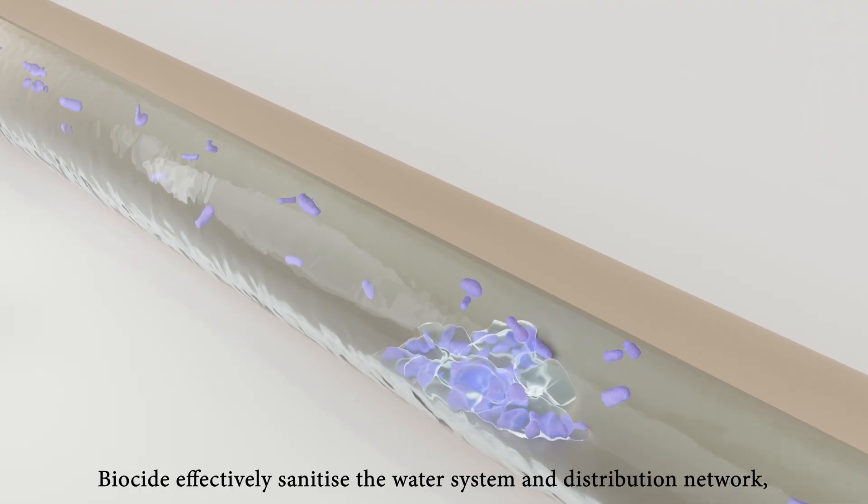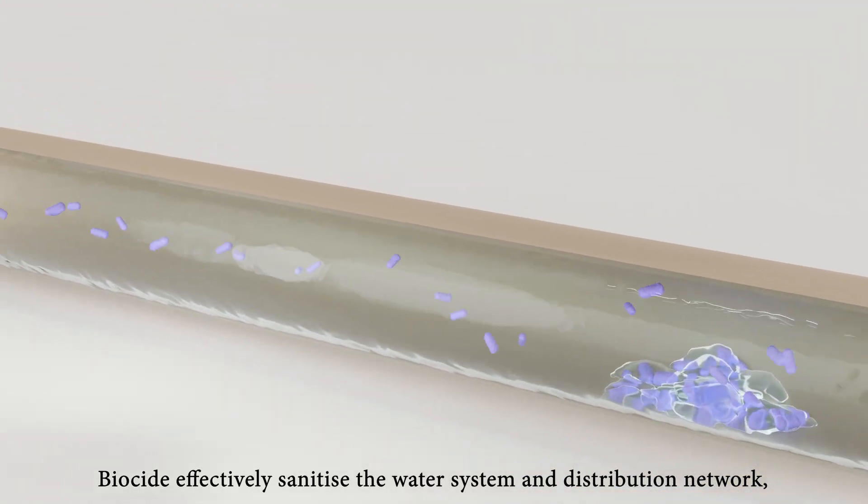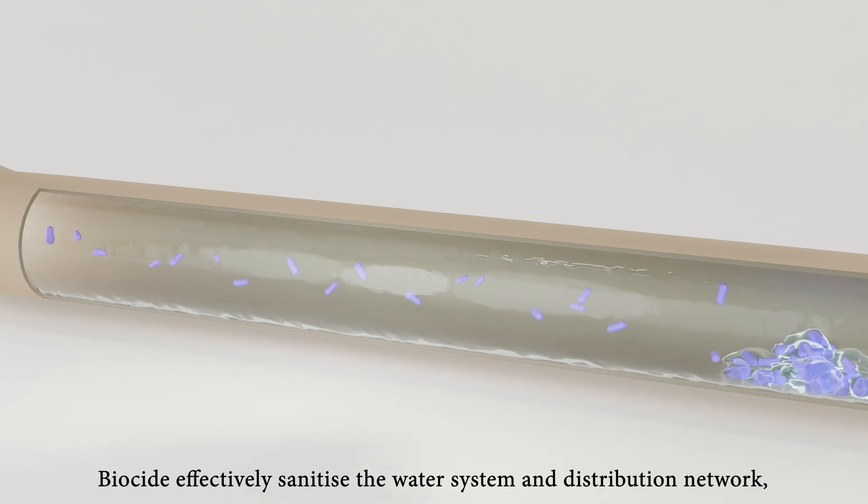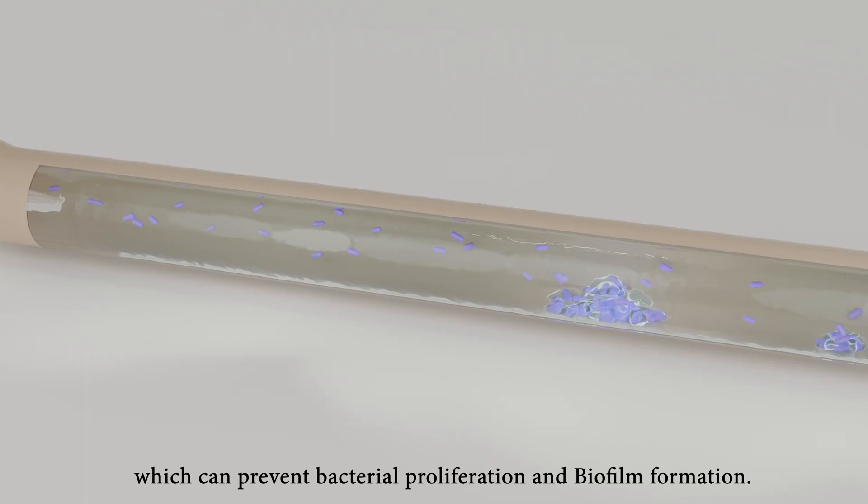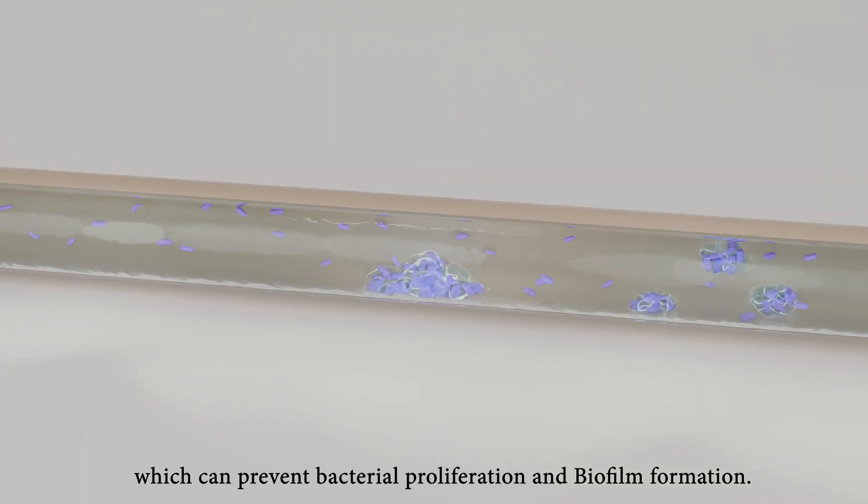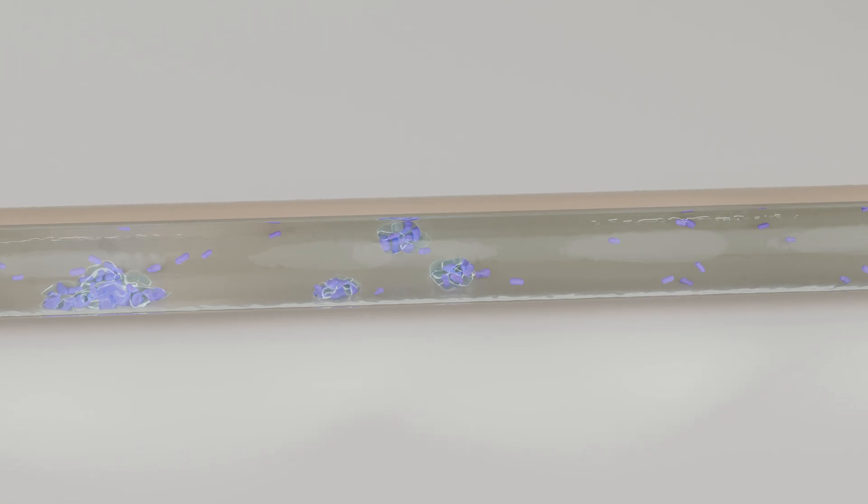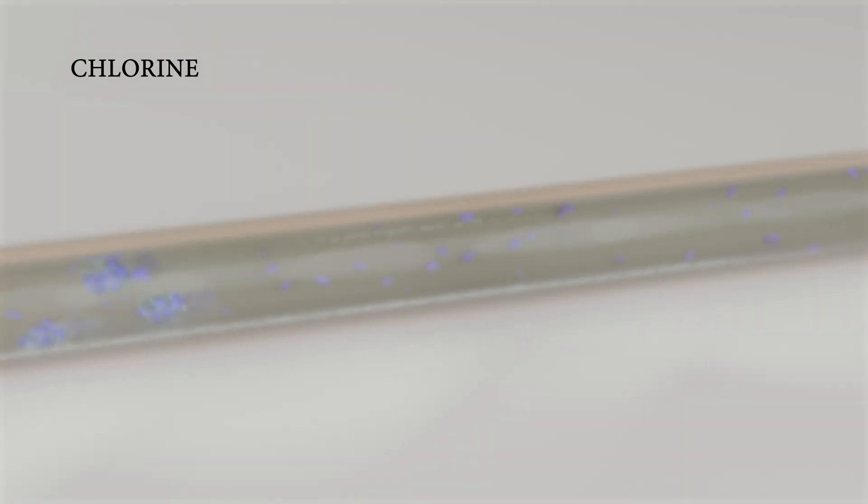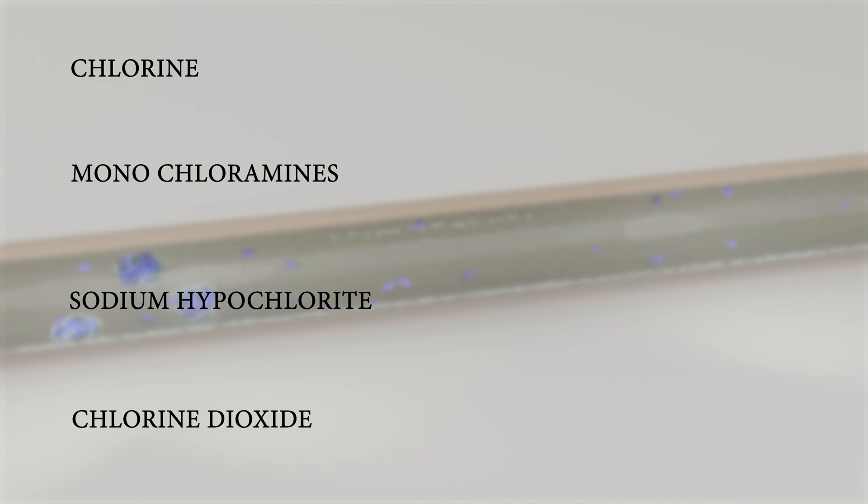Highly concentrated biocide is essential to effectively sanitize the entire water system and distribution network, which can prevent bacterial proliferation and biofilm formation. The most common chemical biocides are chlorine, monochloramines, sodium hypochlorite, and chlorine dioxide. Other biocides include peracetic acid and hydrogen peroxide.